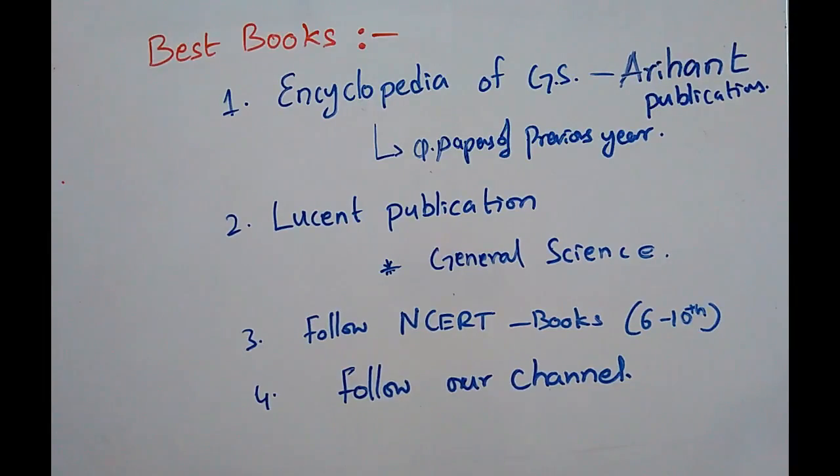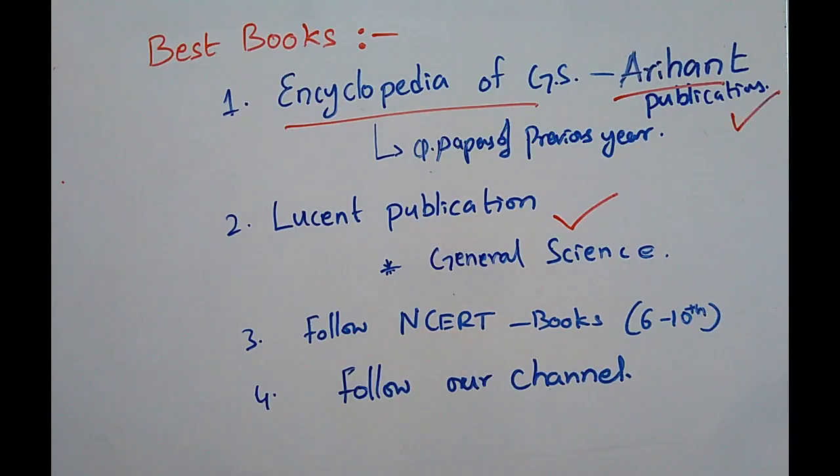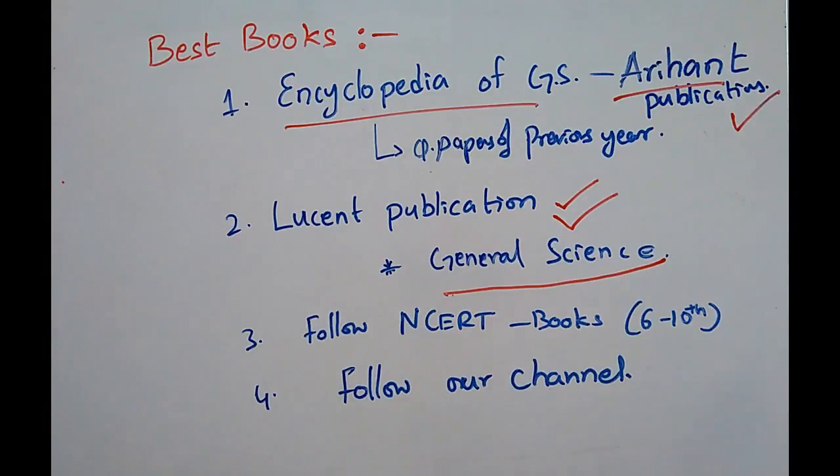These are the books I recommend: Encyclopedia of General Studies by Arihant Publications. In this they have made an analysis of previous year questions. The content is very much related to the exam point of view and you will get many questions at the back. If you come to Lucent's Publications, there will not be much explanation but it's to the point. In less time you can study more. If you buy this book Lucent Publication General Science, it will be very useful. You have to follow NCERT books of 6th to 10th class. And not but not least, please follow our channel. We have uploaded many videos in physics and mathematics.